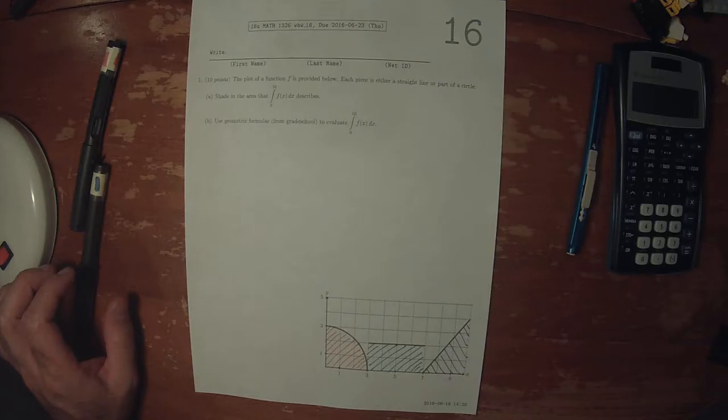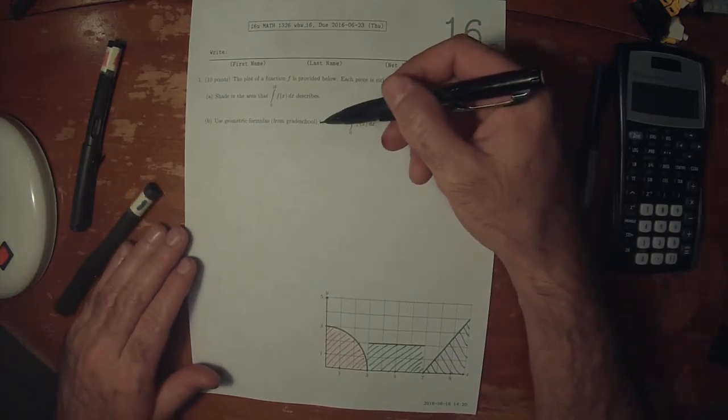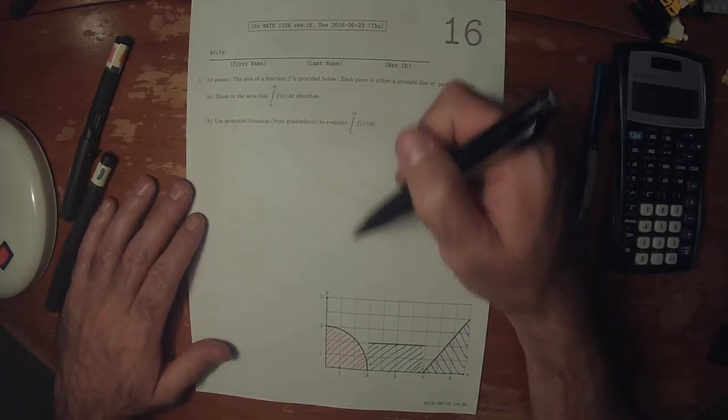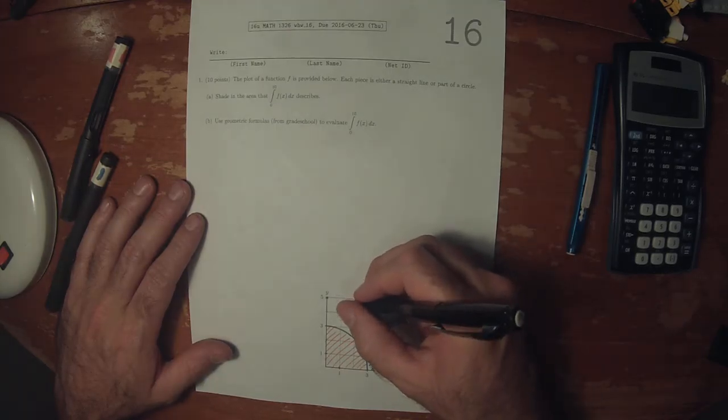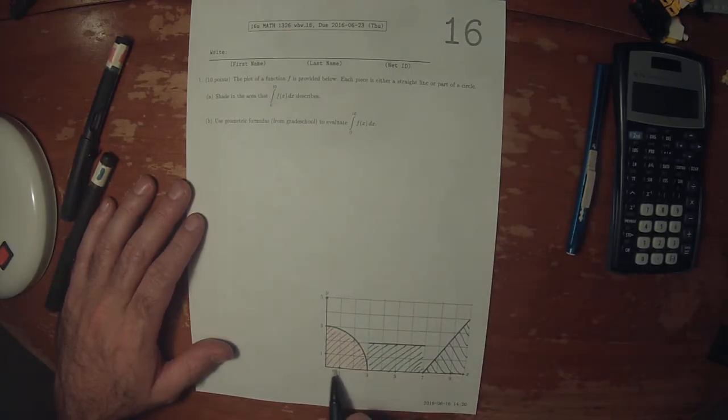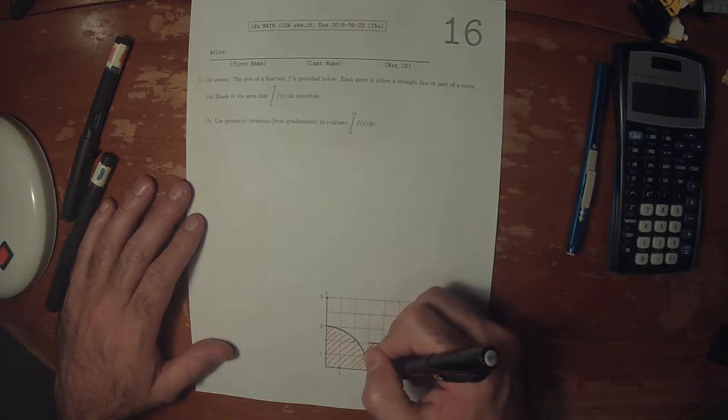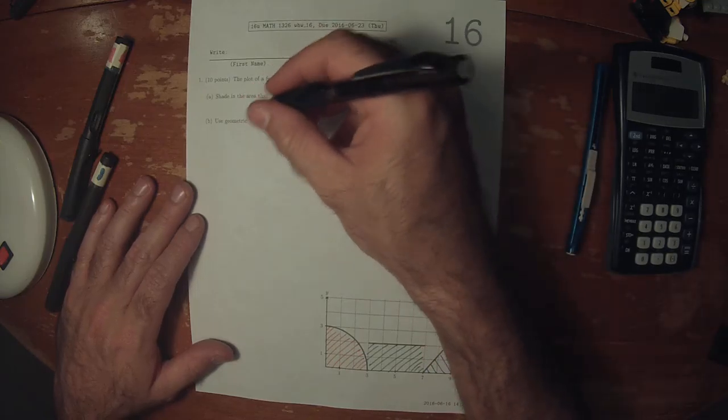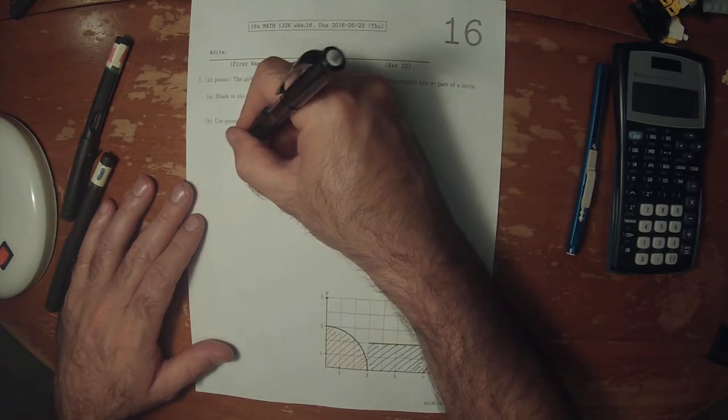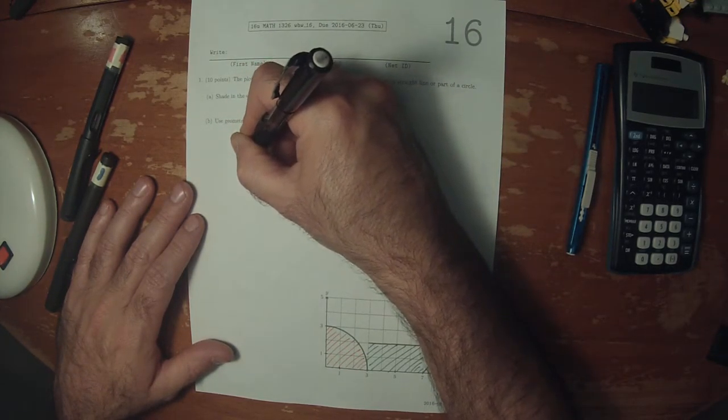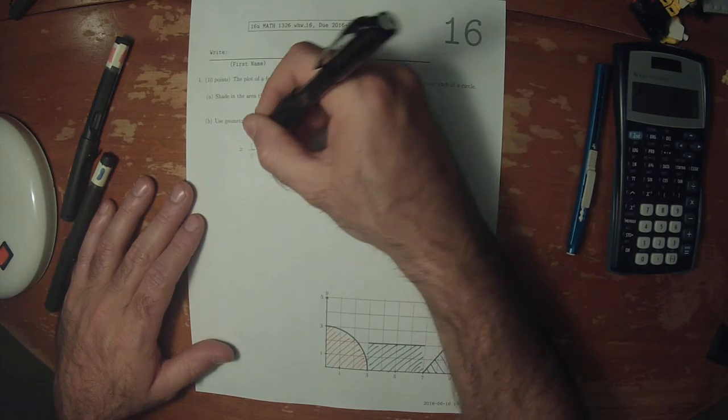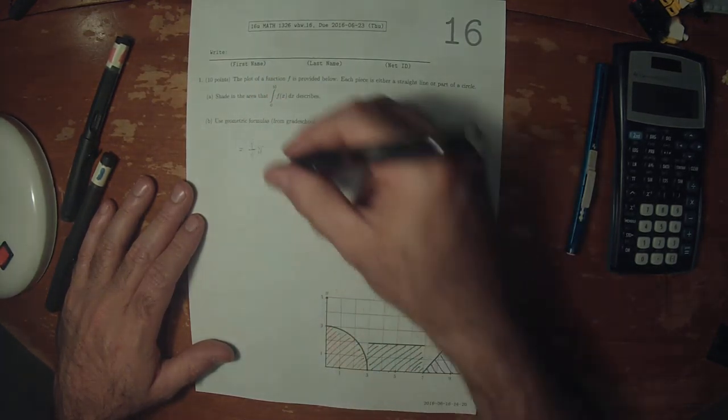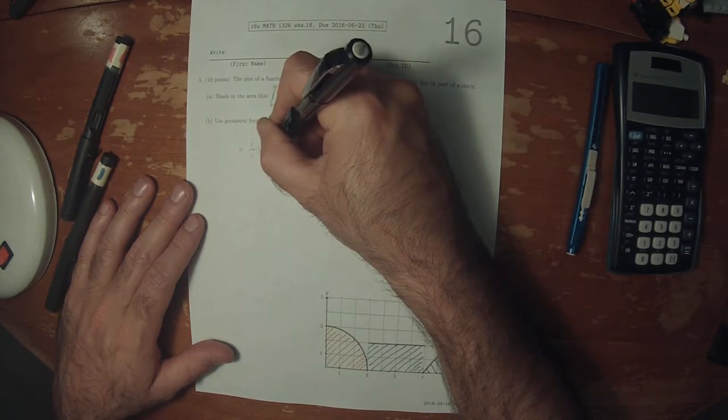So using our grade school geometric formulas, we can find the area of each piece. So this is a circle of radius three. Part of a circle of radius three. It's one fourth. So this would be one fourth, pi, and then the radius is three. So pi three squared,